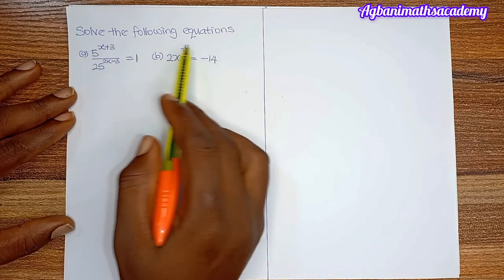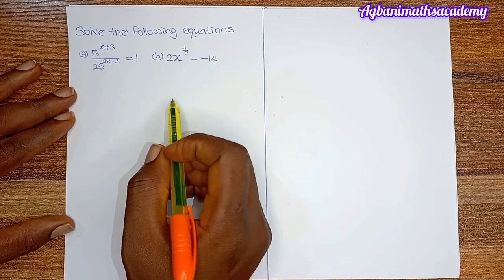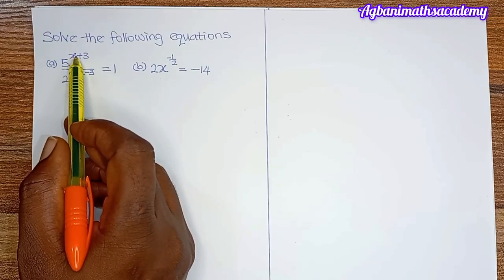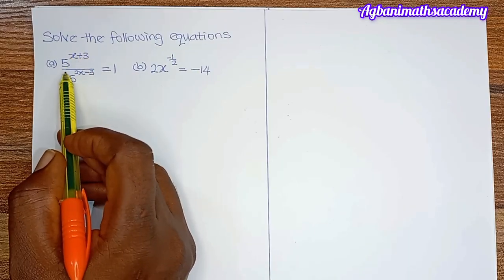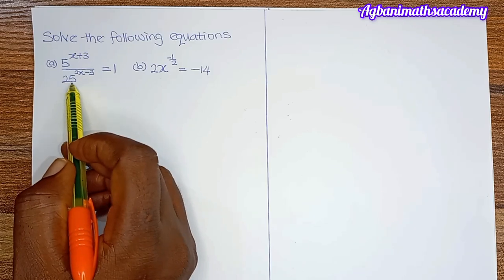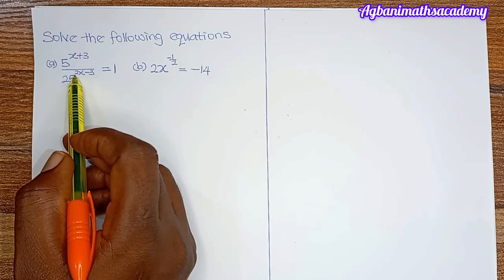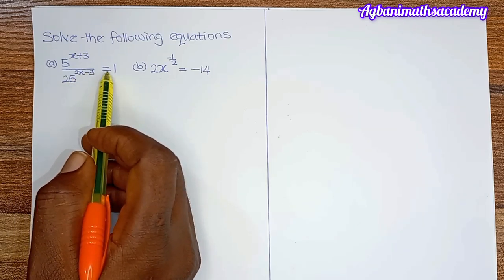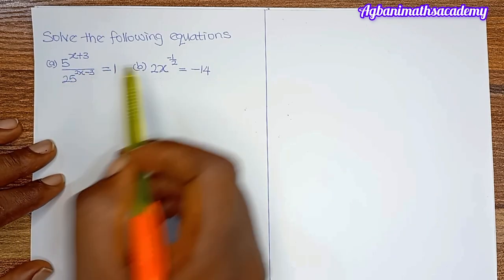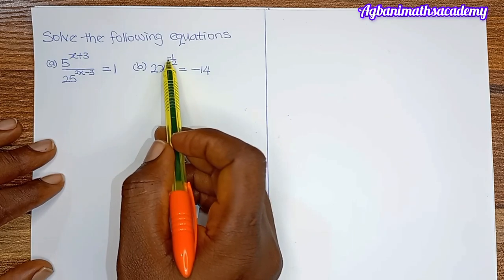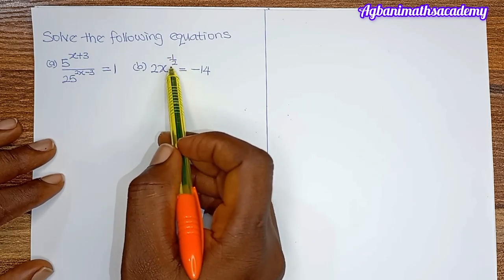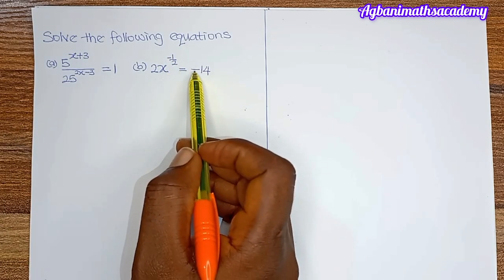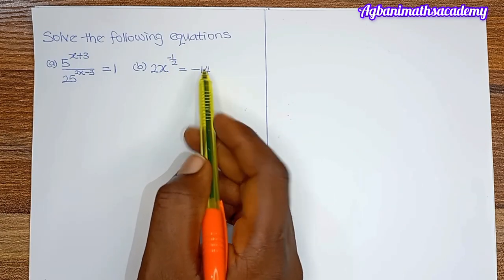Hi guys, let's solve the following equations together. We have 5 to the power of x plus 3, all over 25 to the power of 2x minus 3, is equal to 1. The second question is 2x to the power of minus 1 all over 2 is equal to minus 14.